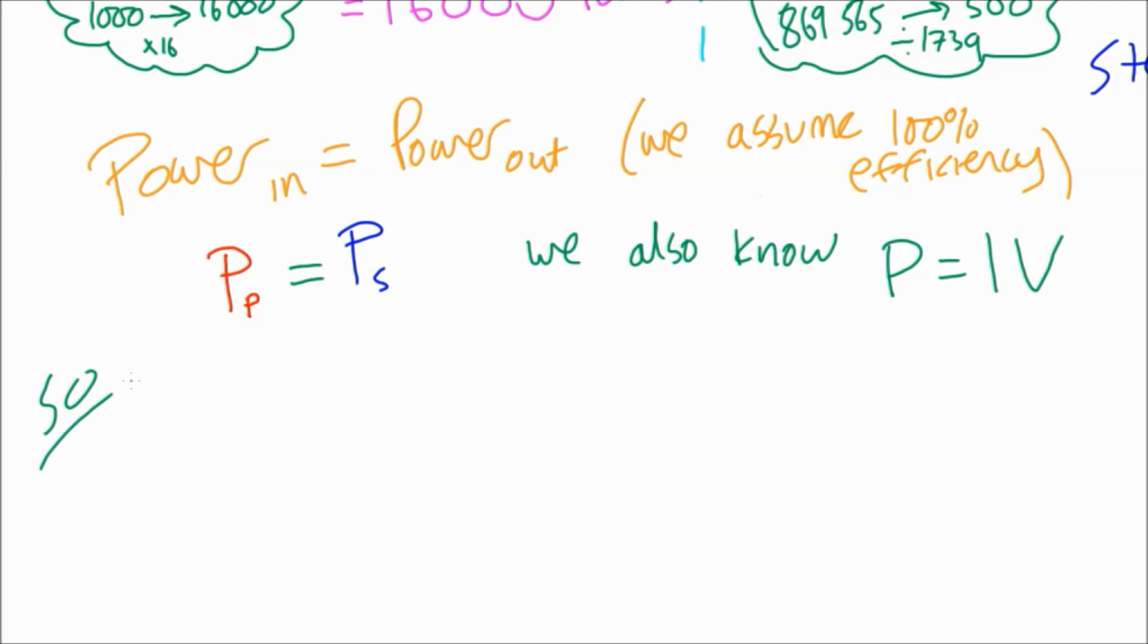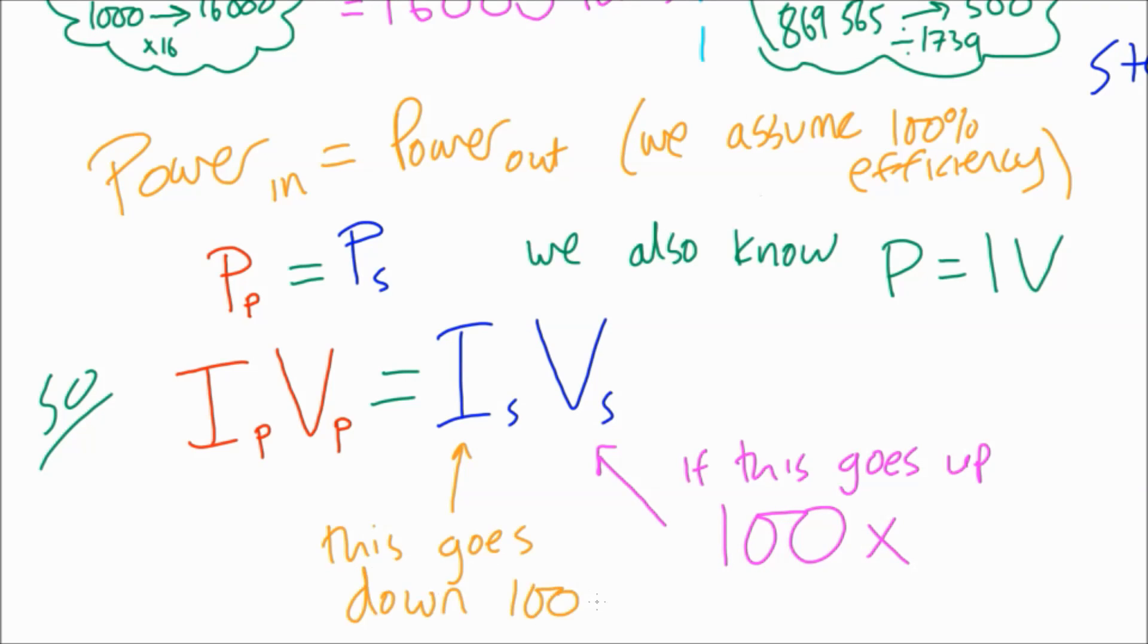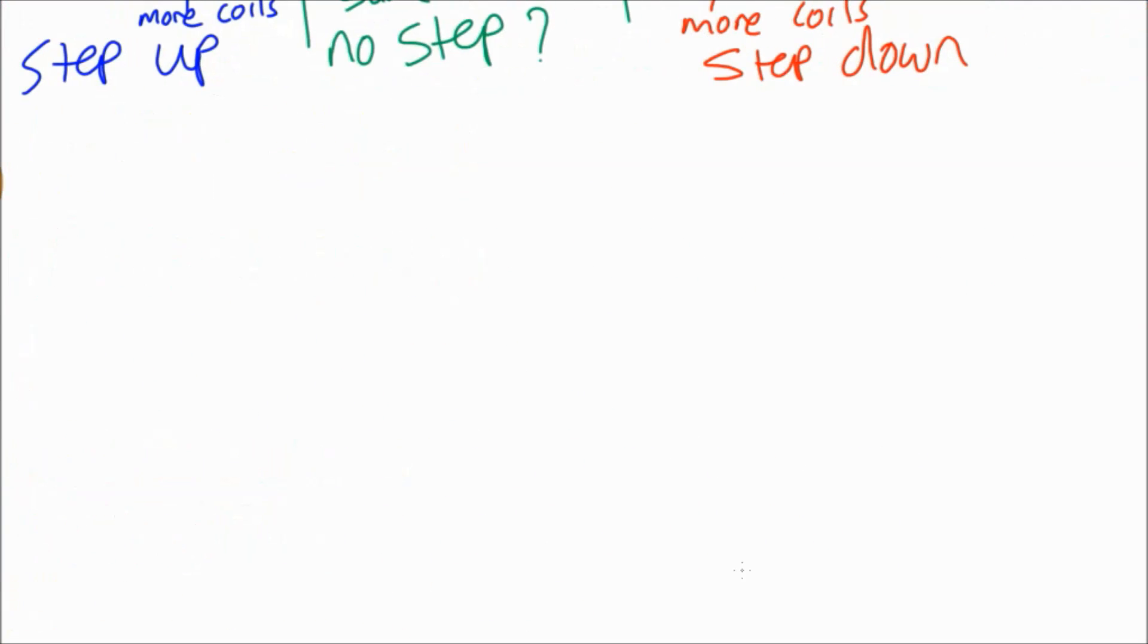It's an equation we've looked at before. So we could look at IPVP equals ISVS. If we look at that, if the voltage goes up by 100 times, as it did coming out of the power station, then the current goes down 100 times. It seems a lot of work to do this. So why do we bother? What's the point?